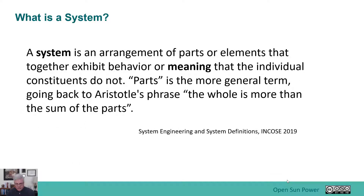A system is another key part of this. A simple definition of a system is an arrangement of parts or elements that together exhibit a behavior or meaning that the individual constituents do not. This goes back to Aristotle's phrase: the whole is more than the sum of the parts. The system is a connection of things working together that delivers the behavior or satisfies the need you want to satisfy with your product.